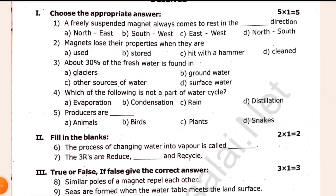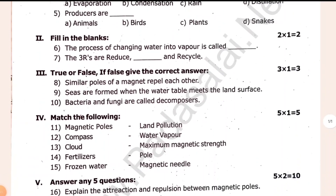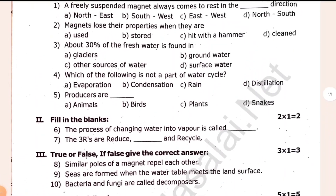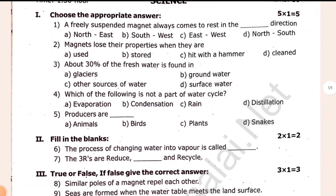Let's check the two seats — fill-ups and drawfalls. We are talking about the line. A suspended magnet always comes to rest in the dash direction. Magnet loses their properties when they are dash.